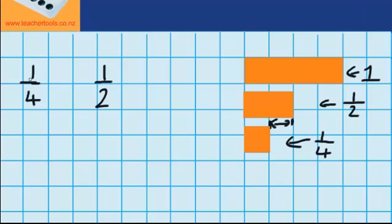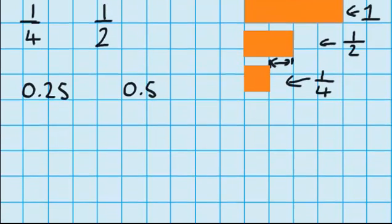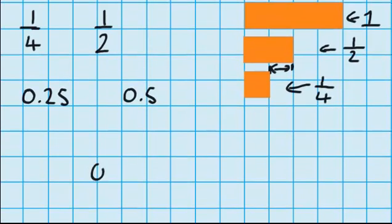Well one way I could answer this question is by changing both of these into decimals. I know that one quarter is the same as 0.25 and I know that one half is the same as 0.5. Let's just put both of these numbers on a number line. So on my number line 0.5 is going to fit in the middle, halfway between 0 and 1, and 0.25 will sit about there.